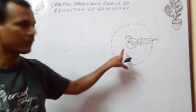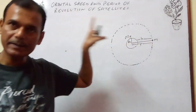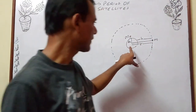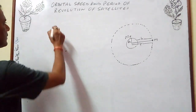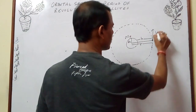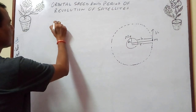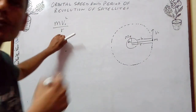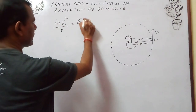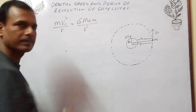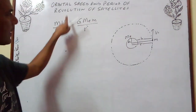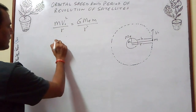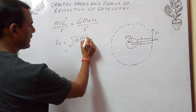As the satellite is moving in a circular orbit, the necessary centripetal force is provided by the gravitational force of attraction between the satellite and earth. If the distance of the satellite from the center of earth is r and its orbital speed is V0, then the centripetal force is m·V0²/r, and this equals the gravitational force G·Me·m/r². V0 is called the orbital speed. On solving, we get V0 equals the square root of G·Me/r.